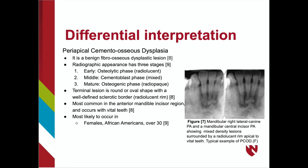PCOD lesions occur with vital teeth and are most common in the anterior mandible incisor region, whereas idiopathic osteosclerosis also occurs with vital teeth but can occur at any location, most likely in the mandibular premolar and molar region. PCOD lesions are most likely to be seen in middle-aged African-American females, while idiopathic osteosclerosis has no predictors with age, gender, or race. Figure 7 exhibits the classic appearance of PCOD, showing two right lateral canine periapical radiographs and a mandibular central incisor periapical radiograph, exhibiting mixed-density lesions surrounded by a radiolucent rim apical to vital teeth.